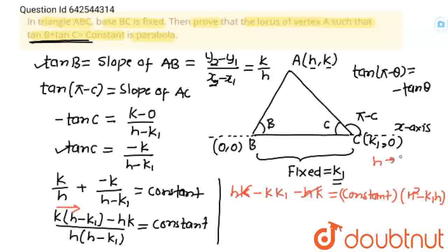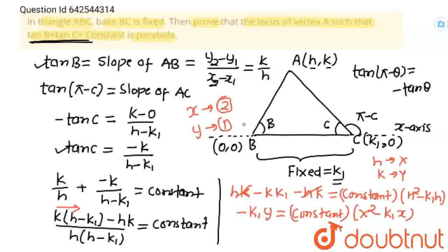This hk and hk will get cancelled out. Now, I am going to replace h with x and k with y. So, we will get minus yk1. So, we can write minus k1y is equals to constant x square minus k1x. And this equation has x highest degree 2 with no other degree and y degree 1 no other degree of y other than 1. And the equation involving both this condition is parabola.